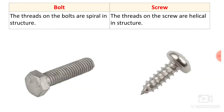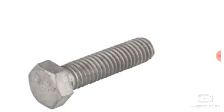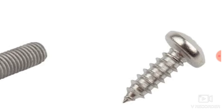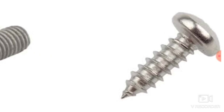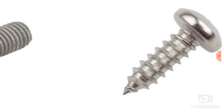The next difference: the threads on a bolt are spiral in structure, as you can see in the image. Whereas the threads on a screw are helical in structure.